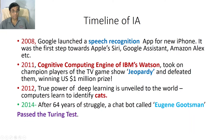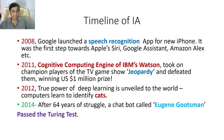Then again, in 2014, after 64 years of struggle, a chatbot called Eugene Goostman passed the Turing test. So it took so many years — and in 2014, the first product in the form of a chatbot passed the Turing test.